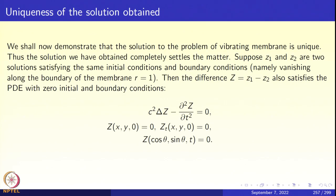Now that we have discussed this, we have obtained the solution for the vibrating membrane using the Fourier-Bessel expansion and the norm formula. Now we need to ask a very basic question: how do we know that the solution to this problem is unique? Maybe the solution is not unique — maybe this is only one of the solutions we obtained. We have to discuss this matter completely. We shall prove uniqueness — that this is the only solution and there are no others.